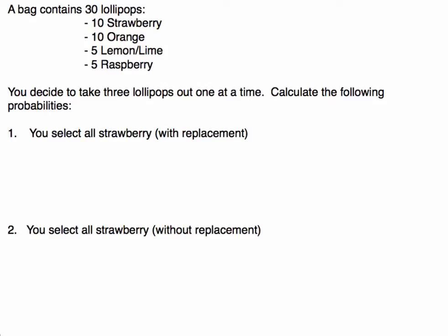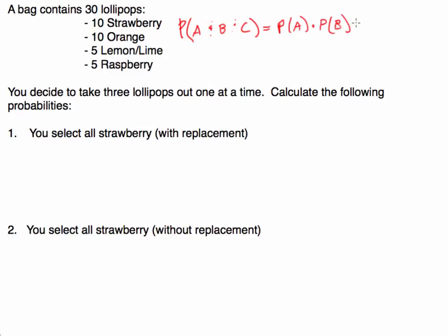What's the probability that you select all strawberry? The multiplication rule says the probability of events A, B, and C occurring together is equal to the probability of A times the probability of B times the probability of C. This could apply to two events, five events, or seven events.